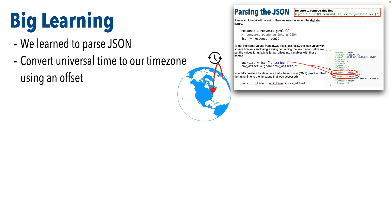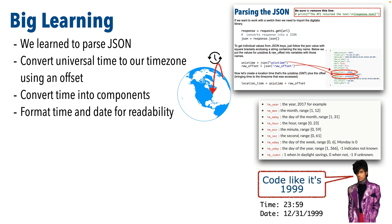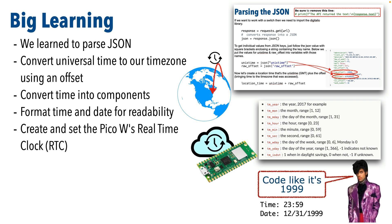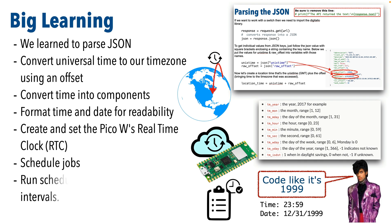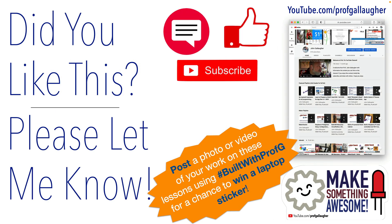We learned to parse JSON, to convert universal time to our time zone using an offset, to convert time into components, to format time and date for readability, to create and set the Pico W's real-time clock, to schedule jobs, and to run scheduled jobs at preset times and intervals. You now have time talent equal to Morris Day and you can work a clock better than Flavor Flav. Use those superpowers to go and make something awesome!